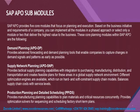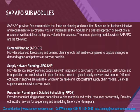Demand Planning provides advanced forecasting and demand planning tools that enable companies to capture changes in demand signals and patterns as early as possible. It is used mainly for forecasting using historic data. Supply Network Planning manages the supply aspects of the supply chain — in supply chain you have the demand flow and also the supply flow: what comes into the company to produce, and what goes out of the company to sell.